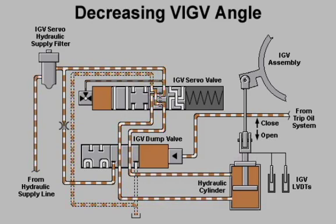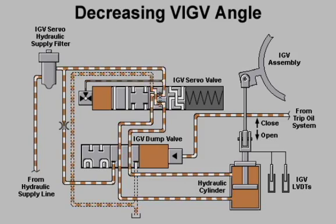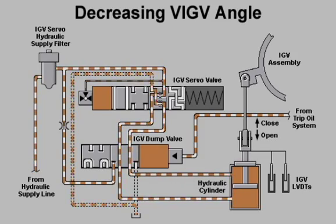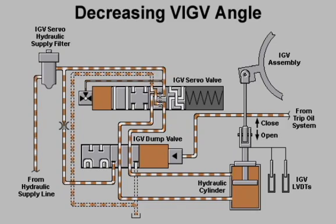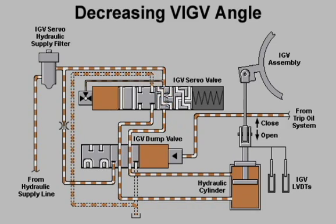The actuating arm of the hydraulic cylinder extends and rotates the inlet guide vane ring clockwise, turning the variable inlet guide vanes to a smaller angle.